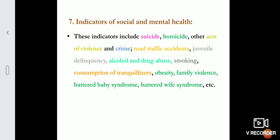Indicators for social and mental health include suicide, homicide, other acts of violence, crime, road traffic accidents, juvenile delinquency, alcohol and drug abuse, smoking, consumption of tranquilizers, drug addiction, obesity, family violence, battered baby syndrome, and battered wife syndrome. These help assess the social and mental health status of a nation by examining in which parts of the country such issues are more prevalent.